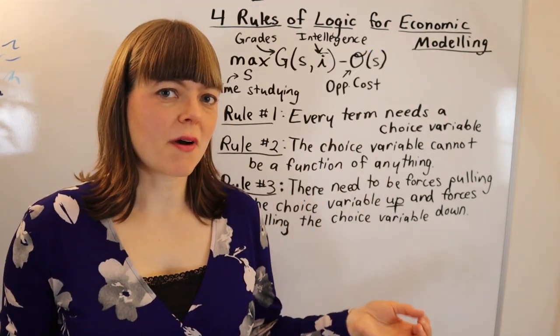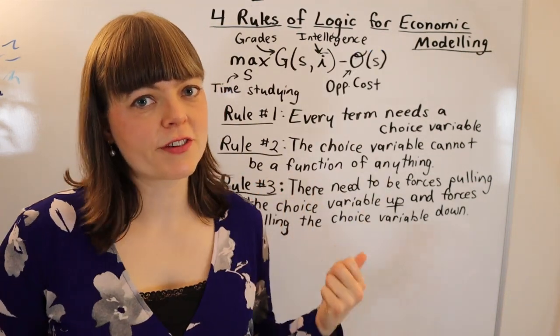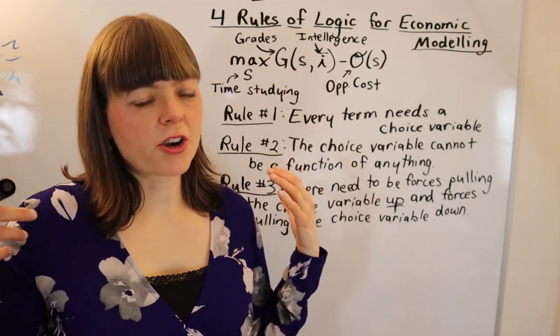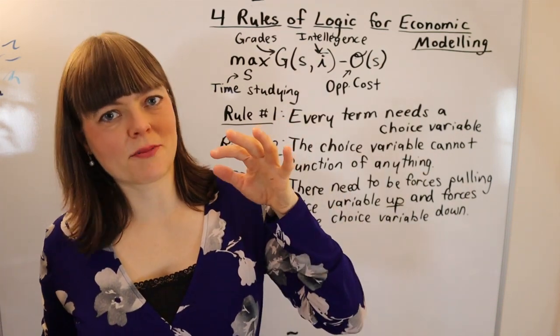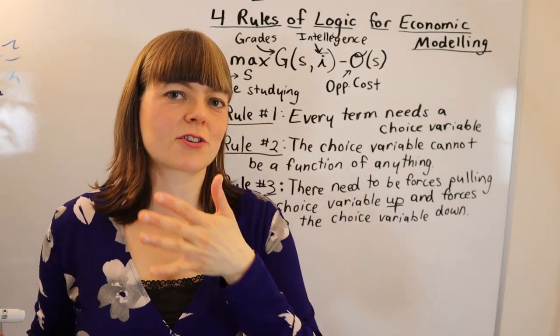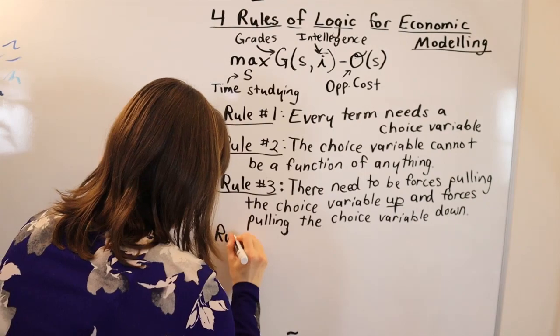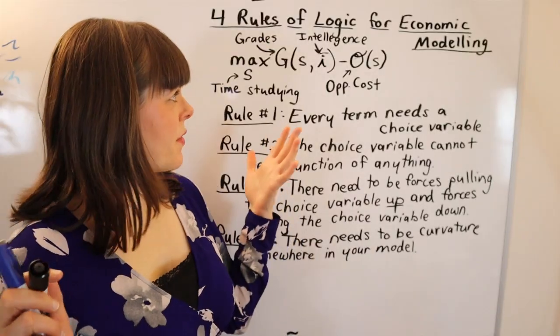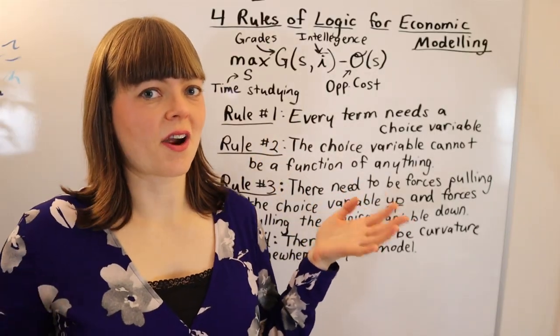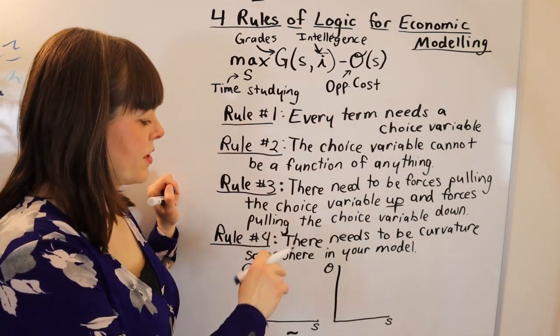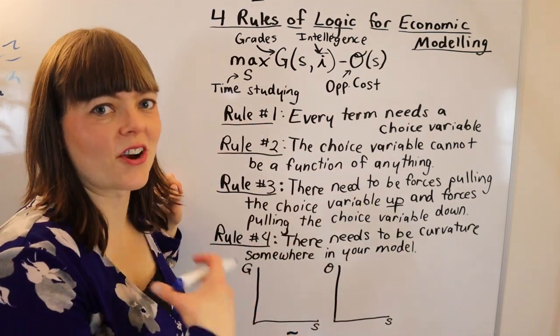The last rule of modeling is that there needs to be curvature in at least one place in your model. By curvature, I mean diminishing marginal benefit, increasing marginal cost, or some other graph shape that has curvature. To see how this works, we're actually going to need to look at graphs. A violation of this fourth rule is going to be where both graphs are linear.